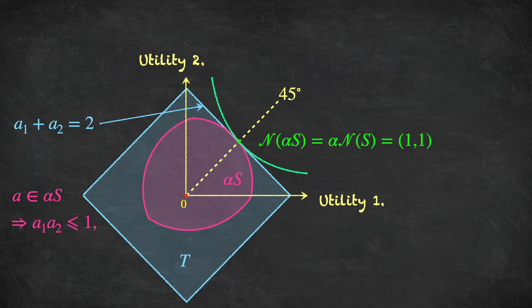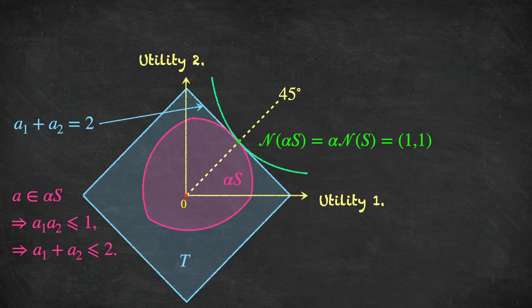Why does this matter? We know that within the set alpha*S, for any alternative A in alpha*S, the Nash product must be less than or equal to 1, because the Nash product is maximized at the point (1, 1) where it equals 1. So for every point in alpha*S, the Nash product is at most 1. One can show that this implies A1 plus A2 is less than or equal to 2 for every element in alpha*S, which means alpha*S is a subset of the large square T.